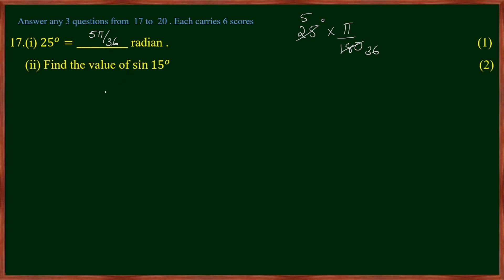The second question: find the value of sin 18°. We write sin 18° as sin(45° - 30°). What is the formula for sin(A - B)?